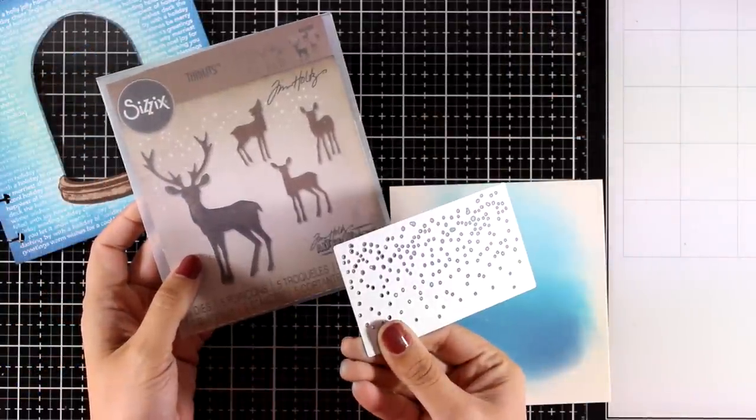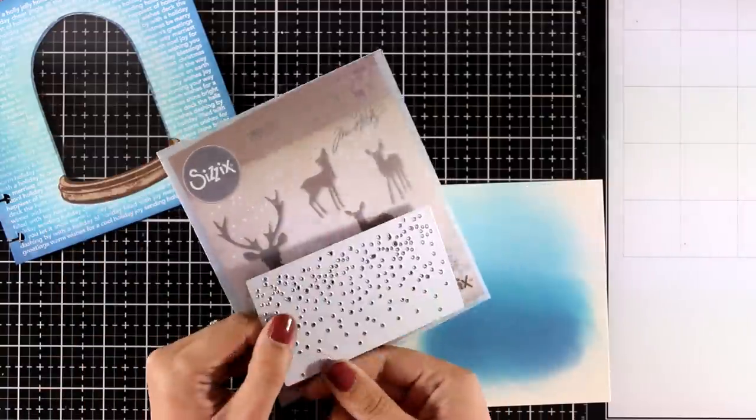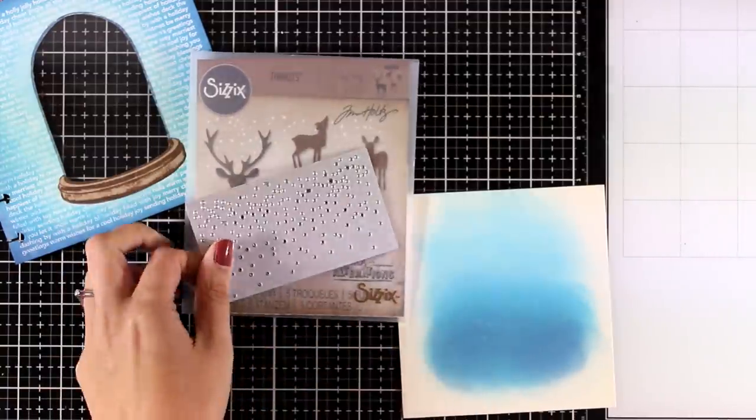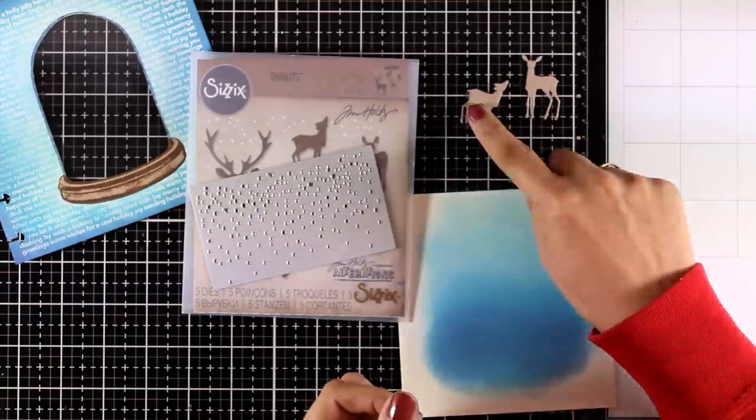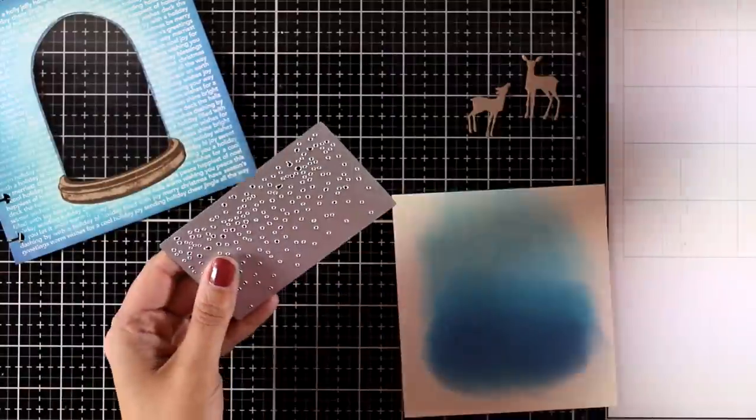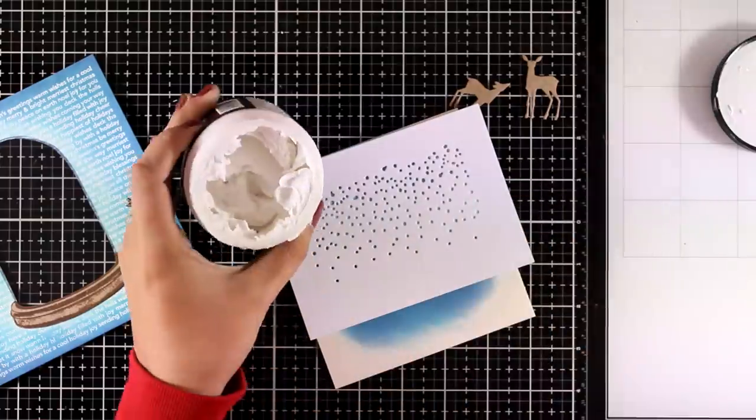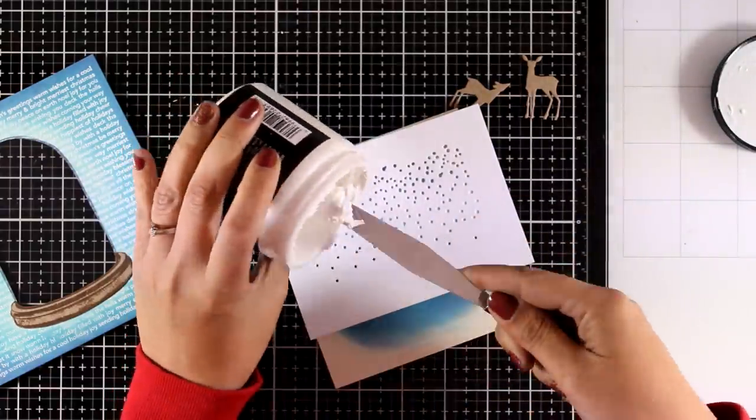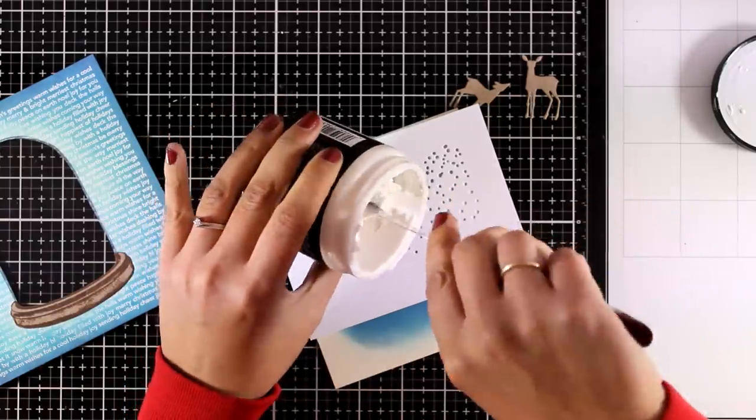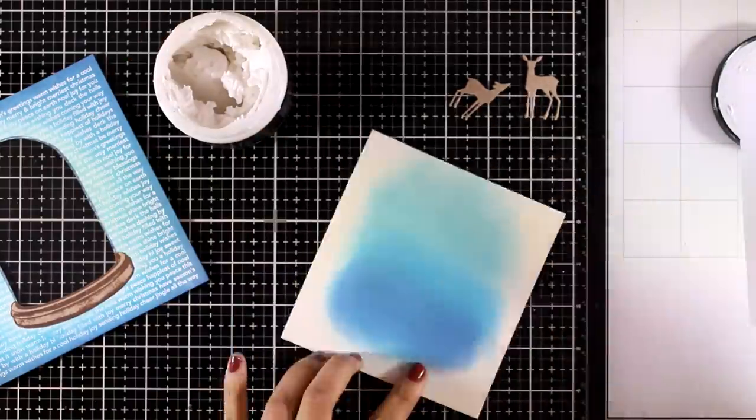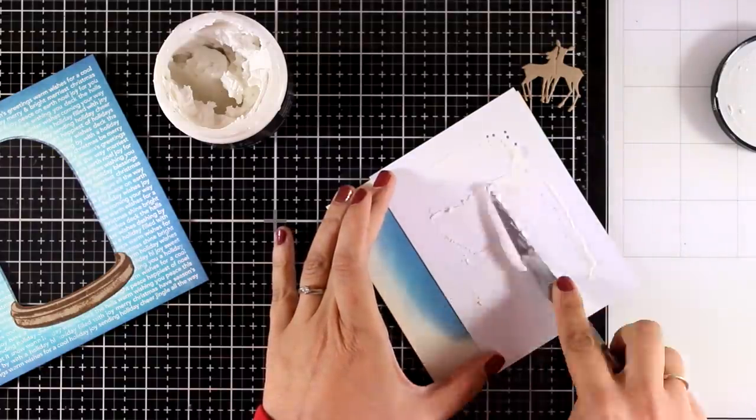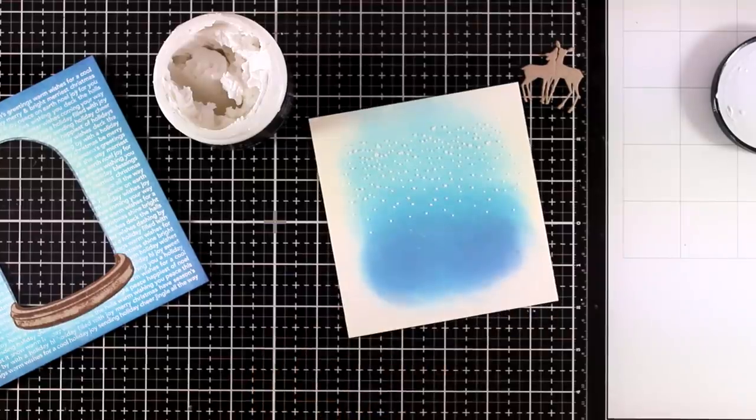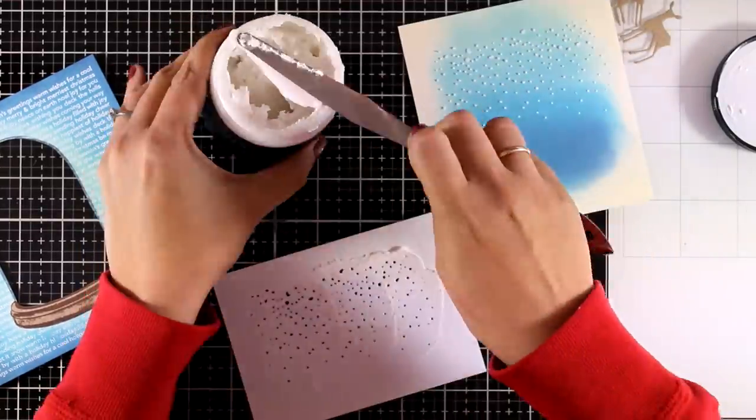Now for the inside of my glass dome I'm going to use dies from this Sizzix die set which is called Winter Wonderland. I have already cut out a couple of deer out of the same craft cardstock as I used for the base of my glass dome and I'm also going to use this die which is from the same set and it actually cuts out snow. And here I just use it to create my own stencil so that I can add some texture paste all over it. Of course you can use this stencil directly on your project which is going to add lots of little holes which are going to look like snow.